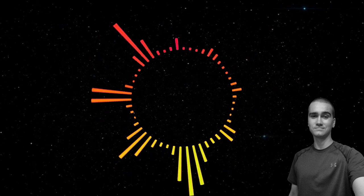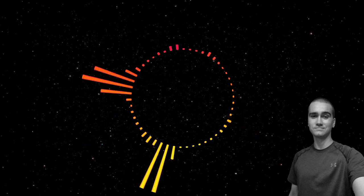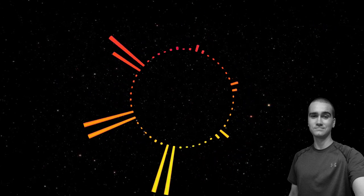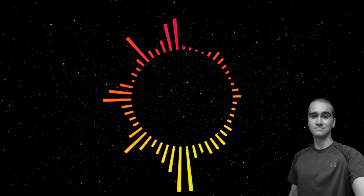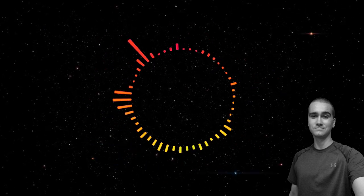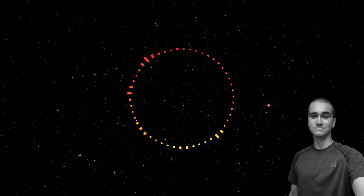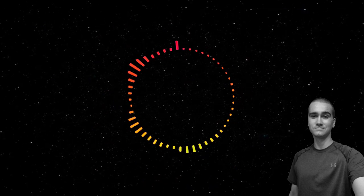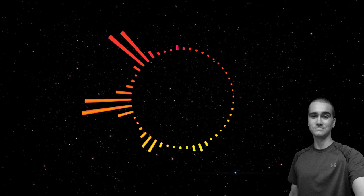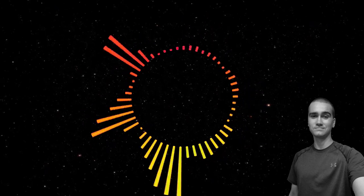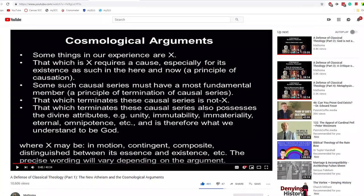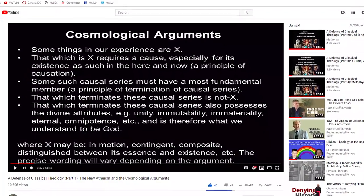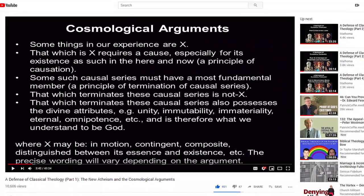Taking all this into consideration, we arise at a problem. In the example of the hand, the stick, and the rock, we saw how each thing that was higher up in the series, actualize the potential of the member below it. But the problem comes in when we realize that the hand had to have its potential to move actualized by another. But if this is the case, which it is, we have to keep following this chain up until we find the first member in the series. Mathema demonstrates this in his video titled, A Defense of Classical Theology Part 1, The New Atheism and the Cosmological Arguments. So here it is.